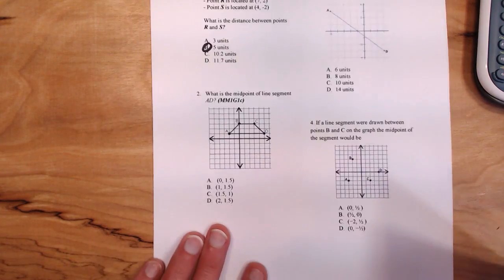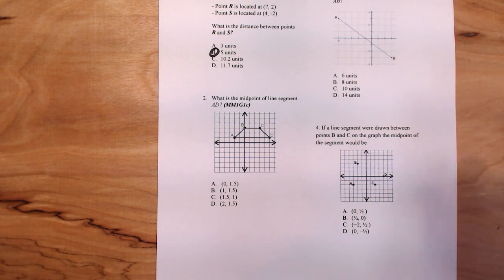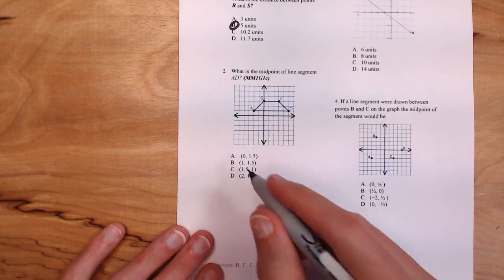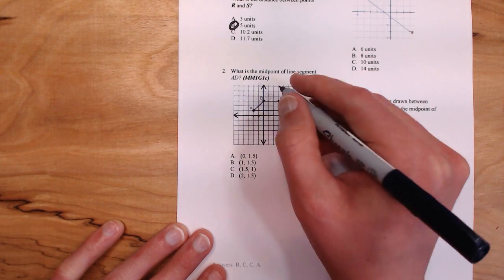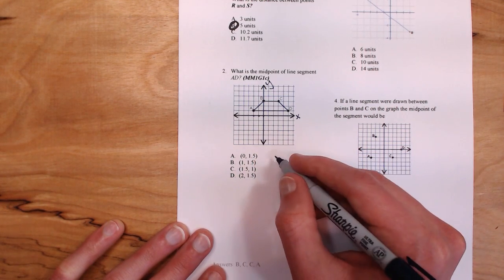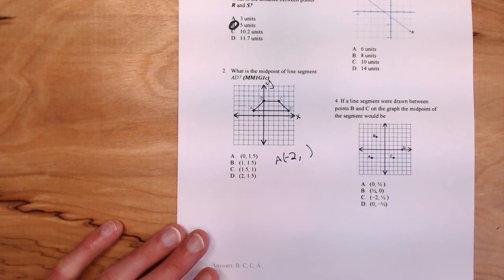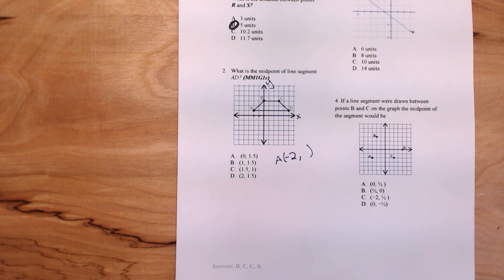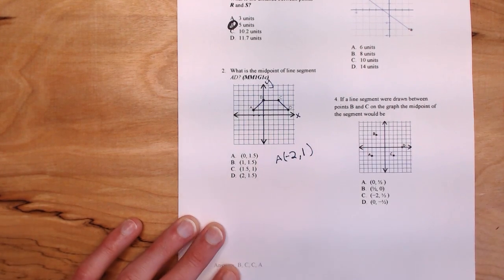Problem number two says, what is the midpoint of line segment AD? In this case, it's our job to pick out the coordinates of point A and D off the graph. To get to point A, I go two units to the left. So for my point A, the x value is negative two. To find the y value, I need to go up and down. I'm going to go up one, so it's positive one. So there's point A.